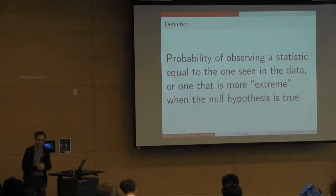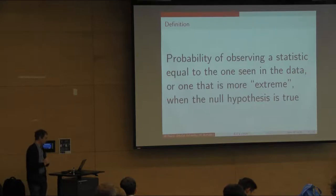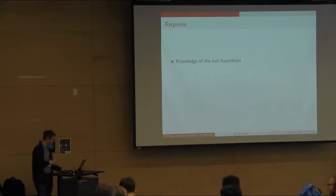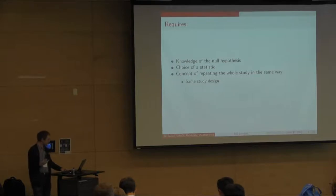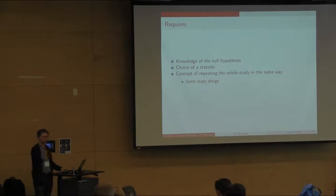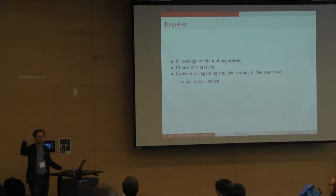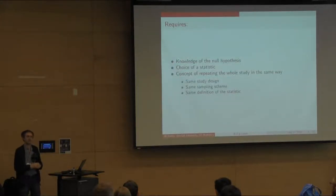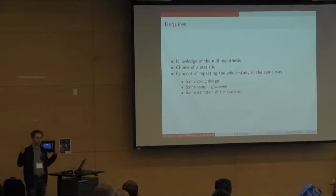A P-value is the probability of observing a statistic equal to the one seen in the data, or one that is more extreme, when the null hypothesis is true. That sounds like a simple definition. You need to know what the null is, you need to choose a statistic, and you have the concept of repeating the whole study the same way a large number of times — with the same study design, the same sampling scheme, the same definition of the statistic. Very few people actually have all those concepts in their mind.